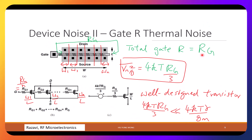The second noise source in a transistor is the gate resistance thermal noise. Recall from the layout: you draw the active region, then the poly gate, which separates the drain and source. The length of the gate is the width of the transistor in layout terms, and the current flows from drain to source under the gate. You can treat this as many transistors of width W1, W2, etc. in parallel.